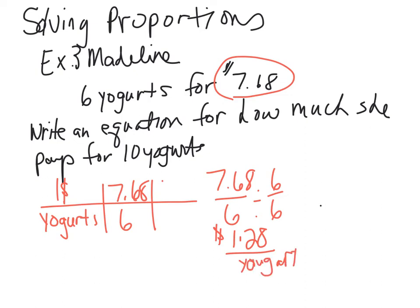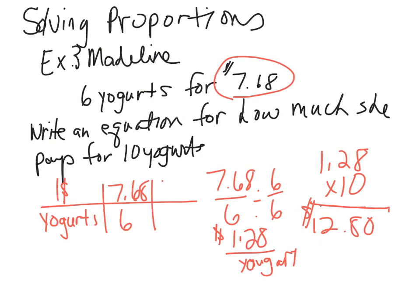If I know that, how much would 10 be? I would take $1.28 and multiply it times 10, and that would be $12.80. You know it's going to be more than 10 because each one is more than a dollar. So it's $12.80 for 10 — the next step is multiplying the unit rate times 10.